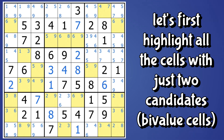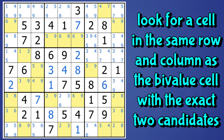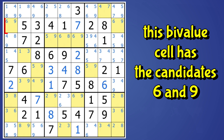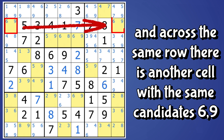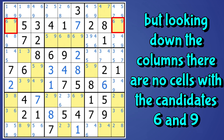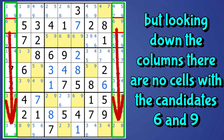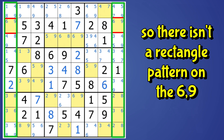First, let's highlight all the bivalue cells — those are the cells with just two candidates. Here I have all the bivalue cells highlighted in yellow. Now we need to look for another cell in the same row and column that has those exact two candidates. It doesn't need to be a bivalue cell, but it needs to have the same two candidates in the row and column to create a rectangle pattern. For example, in block one there's a bivalue cell with candidates six and nine, and across the row is another bivalue cell with six and nine. But looking down both columns, there are no cells with six and nine as candidates, so that doesn't give us a rectangle pattern.